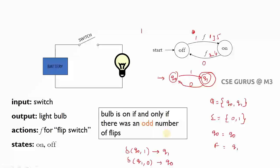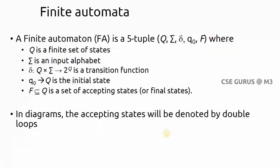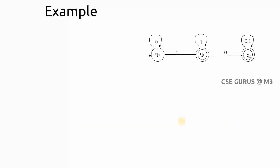Remember: a finite automata is a five-tuple notation consisting of Q, Sigma, delta, q-naught, and F. Final states are always represented with double circles or double loops. Let's take another example — here is a finite automata — and the question is: find all five tuples.